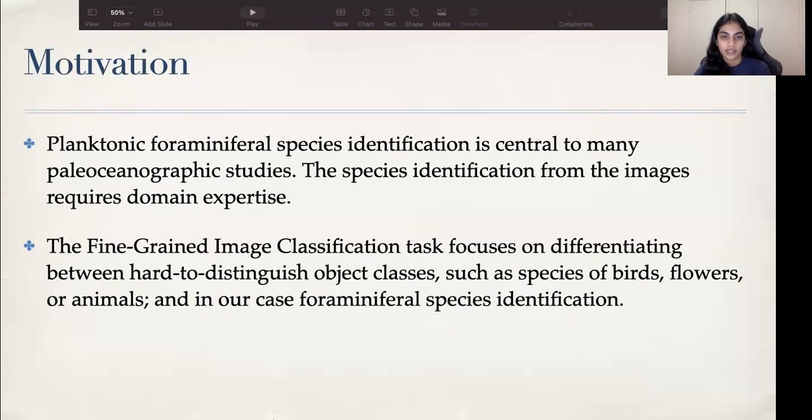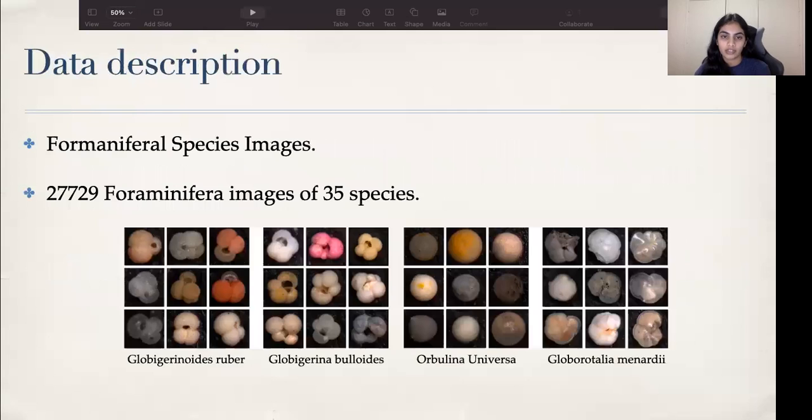The fine-grained image classification task focuses on differentiating between hard-to-distinguish object classes such as species of birds, flowers, or animals, and in our case, foraminiferal species identification.